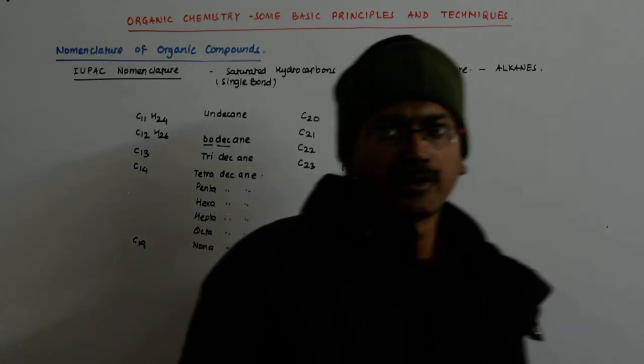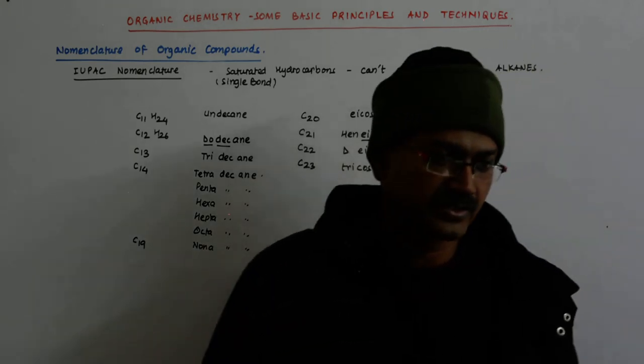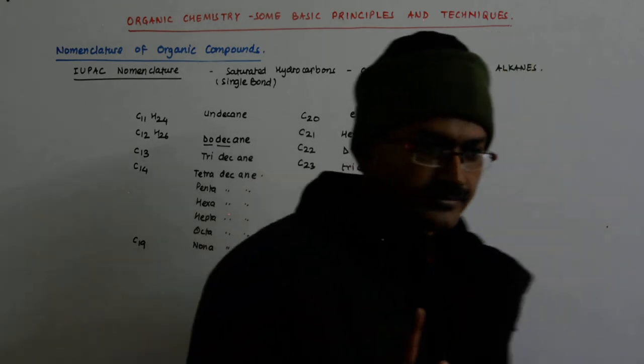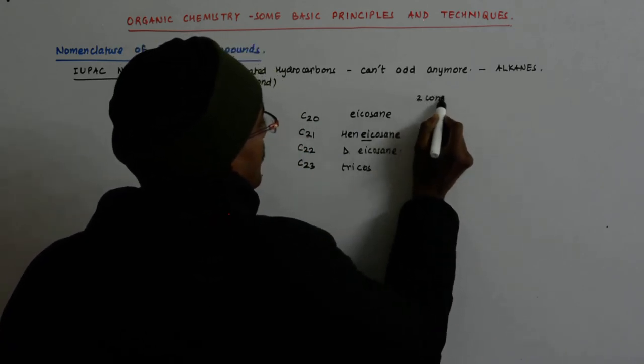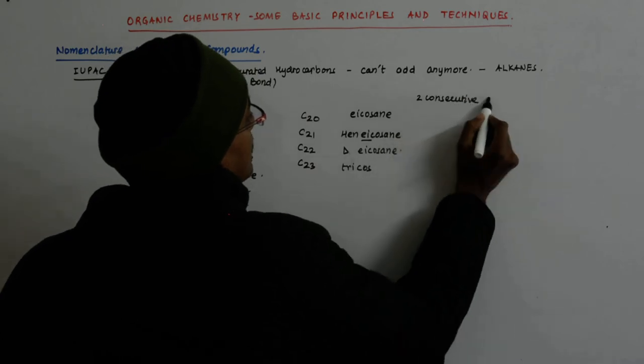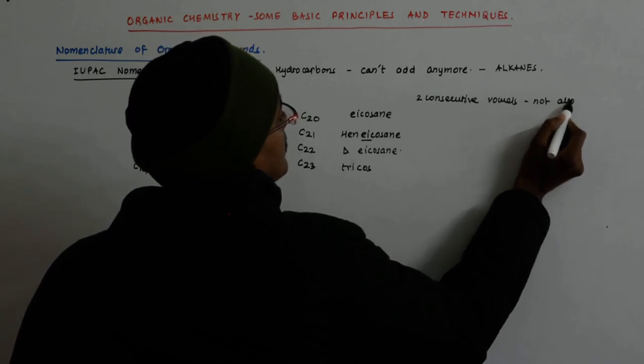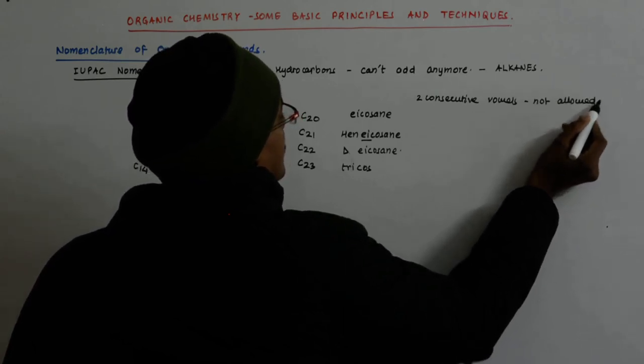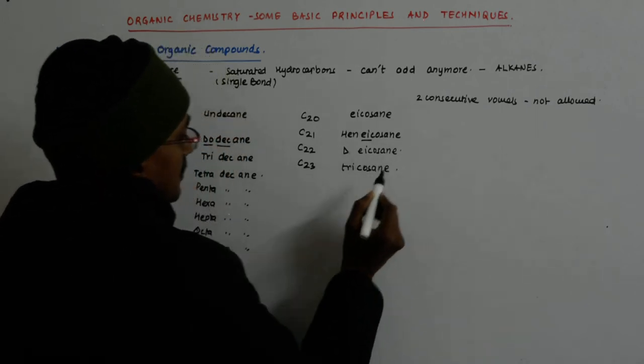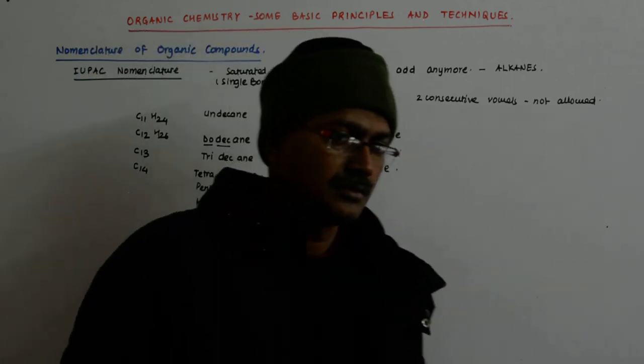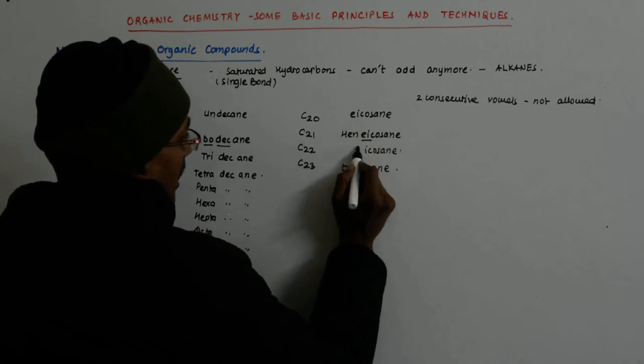And this will be an important property while naming things. We will not have two consecutive vowels, never. Two consecutive vowels are not allowed. So you start calling it tricosane.